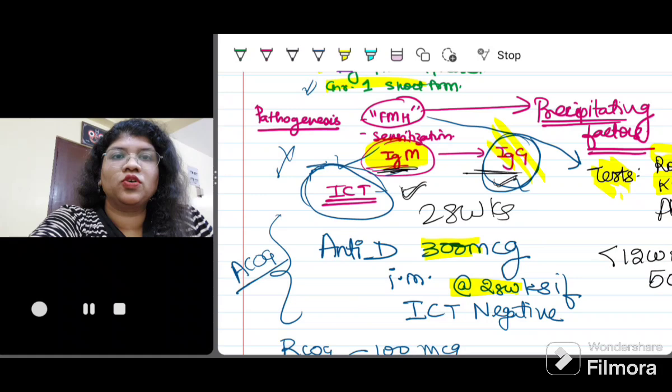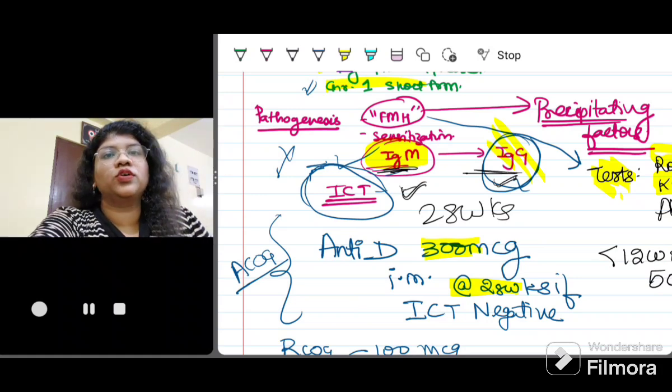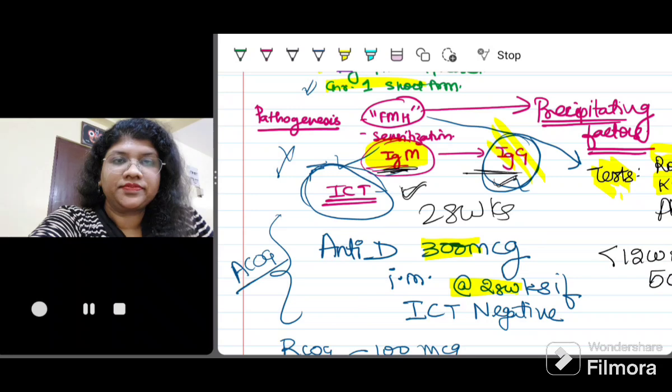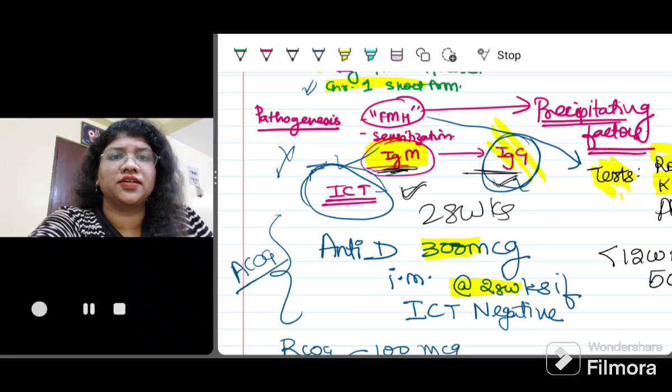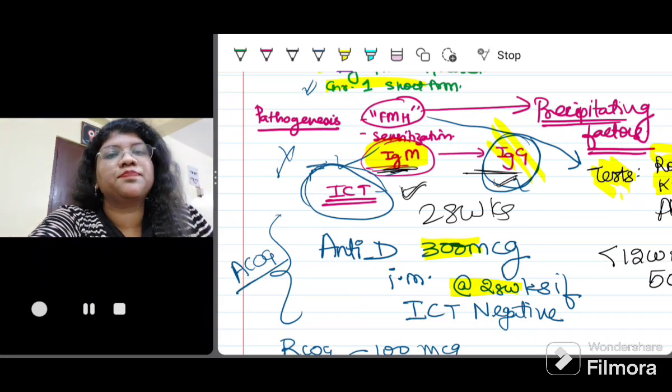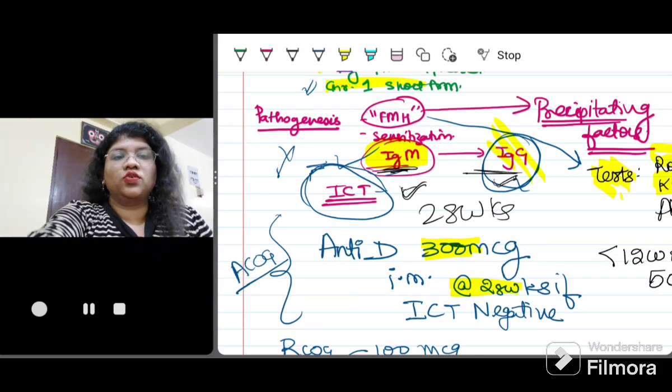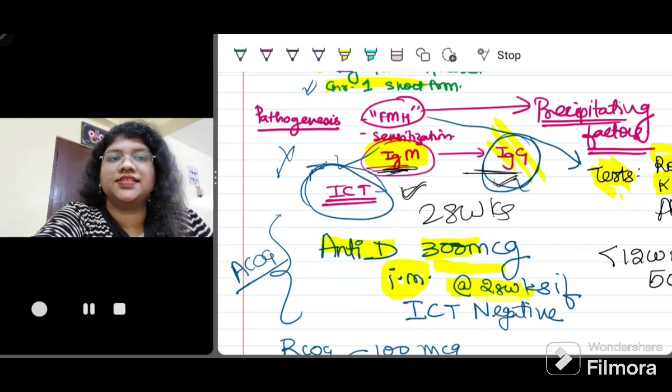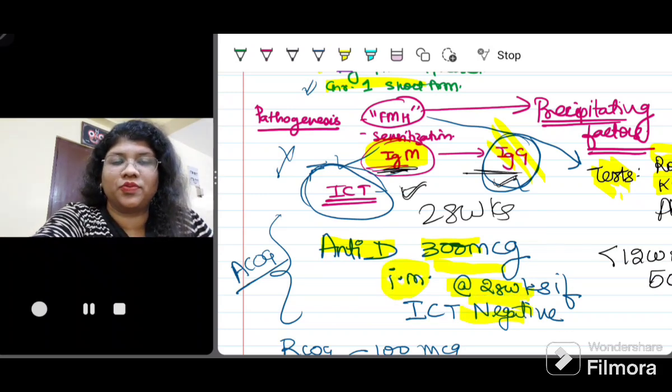Now these anti-D immunoglobulin, what they do, they coat the fetal RBCs which have the antigens on them. So when they enter the maternal circulation, the maternal immune system is unable to recognize these antigens and thereby it prevents primary sensitization. So what is the dose? Anti-D immunoglobulin is given at a dose of 300 micrograms. It is given IM at 28 weeks if ICT is negative. Very very important point.